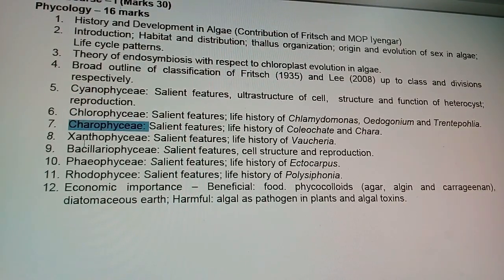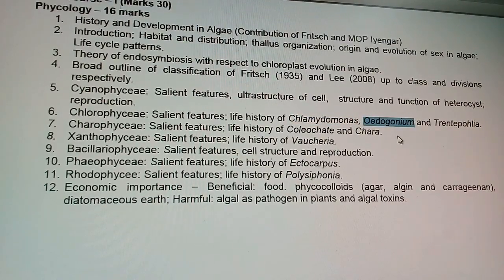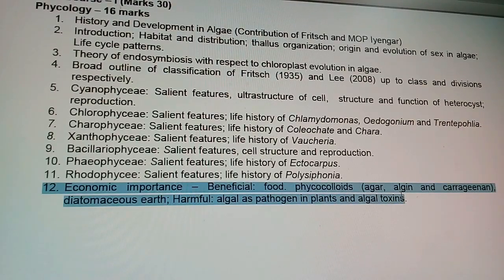The important divisions are Cyanophyceae, Chlorophyceae, Charophyceae, Xanthophyceae, Bacillariophyceae, Phaeophyceae, and Rhodophyceae — these are all important topics that often come in exams, particularly their salient features. Important genera include Chlamydomonas, Oedogonium (very important for exams), Chara, Volvocales, and Polysiphonia, which is an important member of Rhodophyceae.